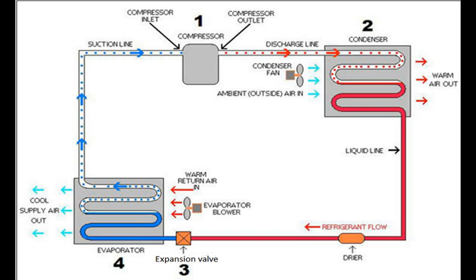The compressor converts this gas into high pressure, high temperature vapour refrigerant, and it goes into the condenser through the discharge line. In the condenser, high pressure, high temperature vapour refrigerant enters through the discharge line. Latent heat is rejected to the atmospheric air from the vapour refrigerant, and it converts into liquid refrigerant without changing its sensible heat. This high pressure, high temperature liquid refrigerant then goes to the expansion valve through the liquid line.